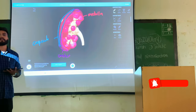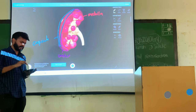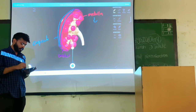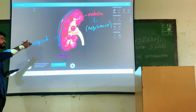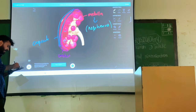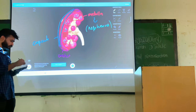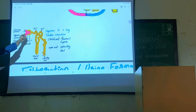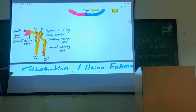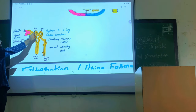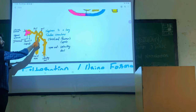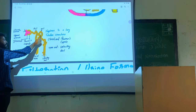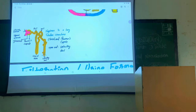The medulla contains medullary pyramids, and inside these pyramids you have your nephrons — the functional units. The nephron consists of: the glomerulus, the cup-shaped Bowman's capsule, the proximal convoluted tubule, the loop of Henle where the tubule dips downward, the distal convoluted tubule, and then the collecting duct.